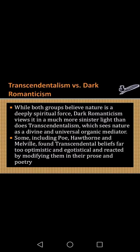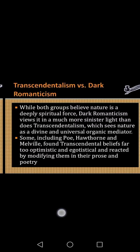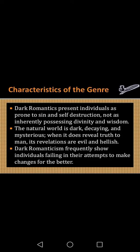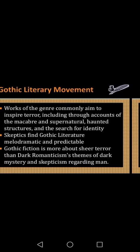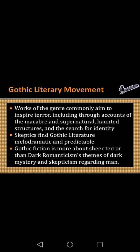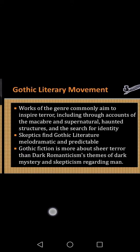So you can see how dark romanticism prevailed — it is really different and slightly diverges from transcendentalism. Dark romanticism included Edgar Allan Poe, Nathaniel Hawthorne, and Herman Melville, who were all part of dark romanticism. Other characteristics can include self-destruction and possessing divinity and wisdom. The gothic literary movement also inspired it, finding expression in gothic fiction.